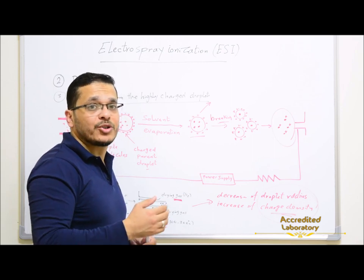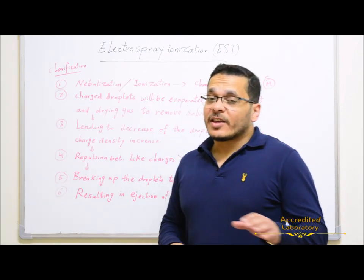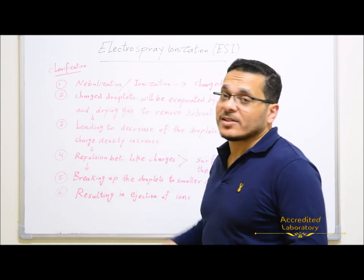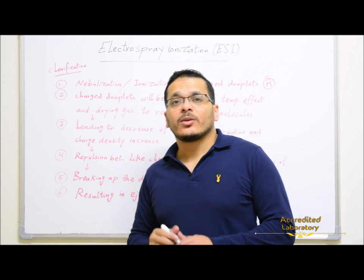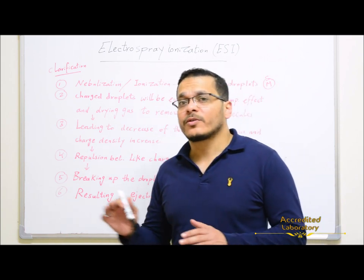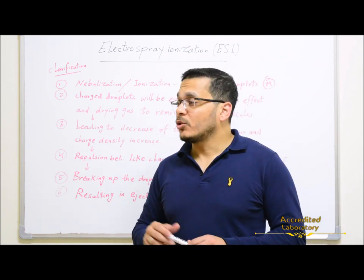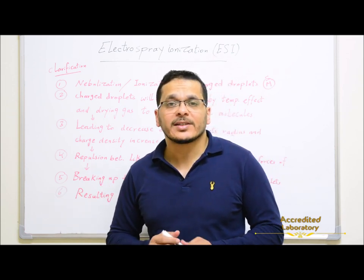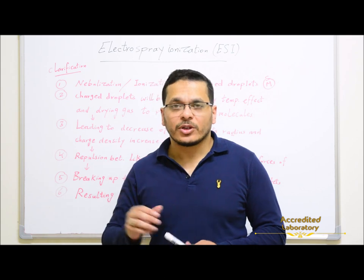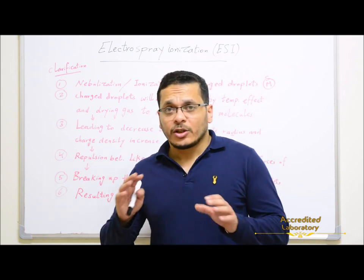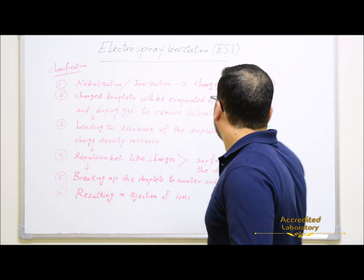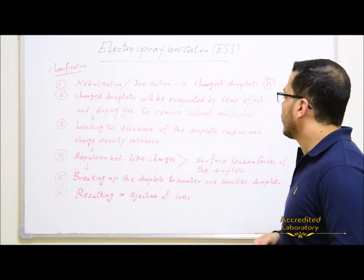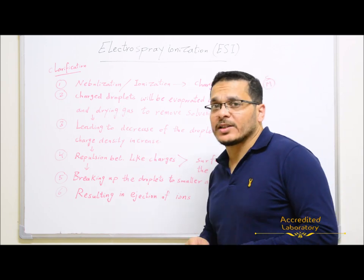To clarify this process simply: first, nebulization and ionization — the eluent-carrying sample molecules move through the electrospray capillary to be nebulized by nitrogen gas and then ionized by the high voltage applied on the capillary. The charged droplets are produced and consist of sample molecules surrounded by solvent molecules with the same polarity as the voltage applied.